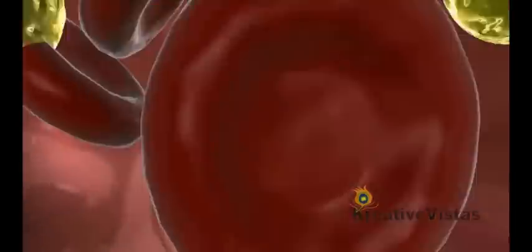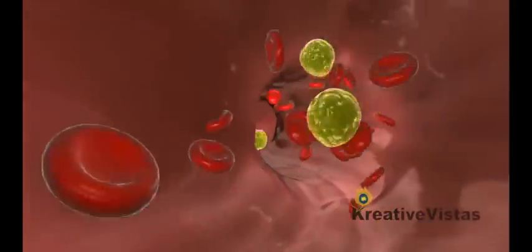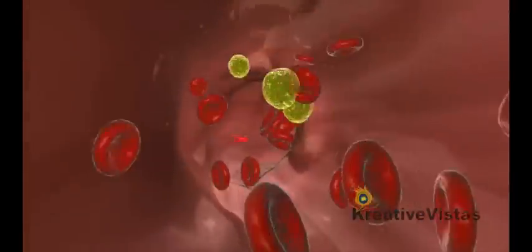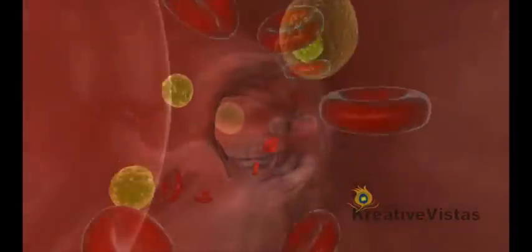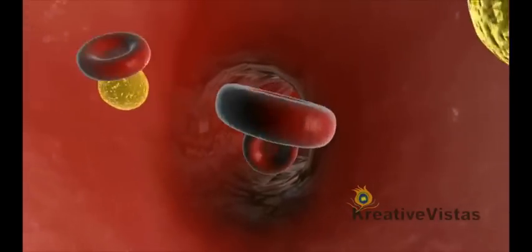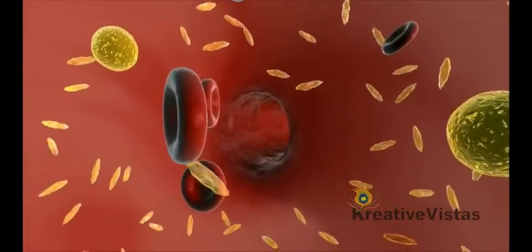Some white blood cells recognize and remember specific foreign organisms that the body has been exposed to in the past. These cells are called lymphocytes. Lymphocytes consist of three main subgroups: B cells, T cells, and natural killer cells.